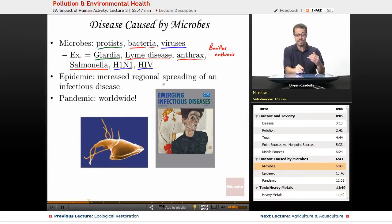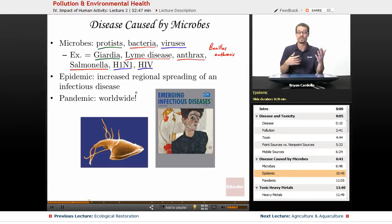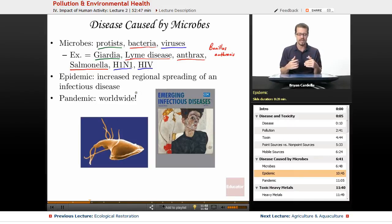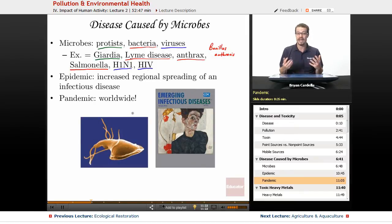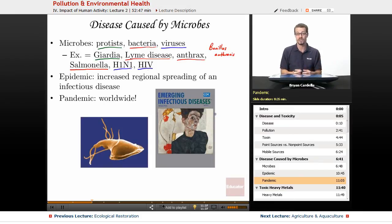An epidemic is an increased regional spreading of an infectious disease beyond the expected rate of contagiousness. This can lead to a pandemic — 'pan' meaning worldwide. Examples of pandemics include H1N1 swine flu in 2009, SARS, and the bubonic plague — the Black Death in Europe. The CDC publishes a journal on emerging infectious diseases that scientists and doctors should keep up on.